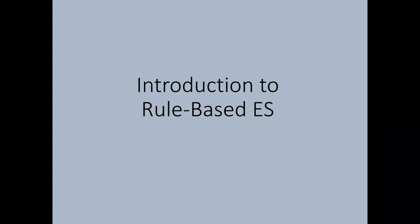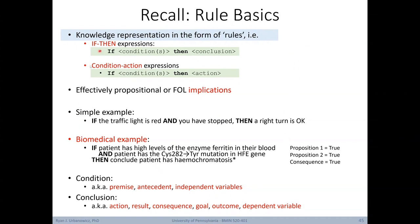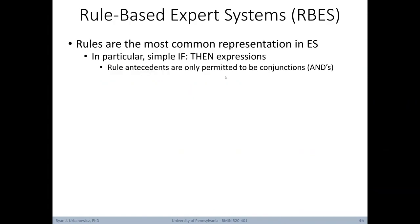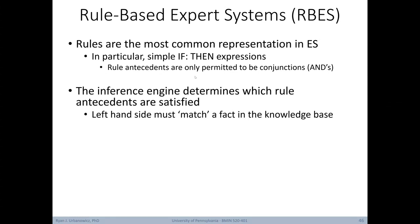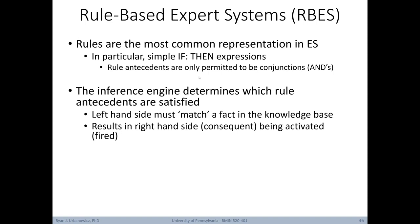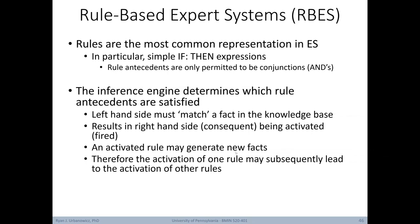As a segue into our next lecture, we give a brief introduction to rule-based expert systems. Rules given as if-then expressions are the most common representation used in expert systems. In such systems, rule antecedents are only permitted to be conjunctions (ANDs). The inference engine determines which rule antecedents are satisfied — the left-hand side must match a fact in the knowledge base when doing forward chaining. When this happens, the right-hand side or consequent gets activated or fired, potentially adding new facts, which may subsequently activate other rules downstream.